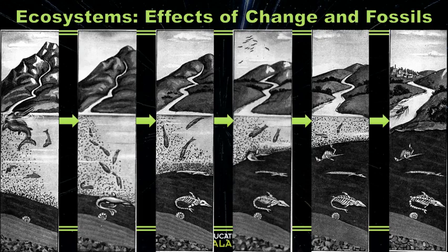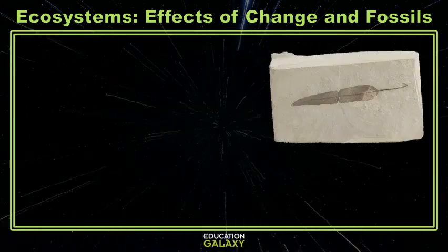Fossils can tell us a lot about different prehistoric organisms. For example, when we look at the fossils of leaves from a certain area, we can use the leaf shape and structure to speculate the area's prehistoric climate.